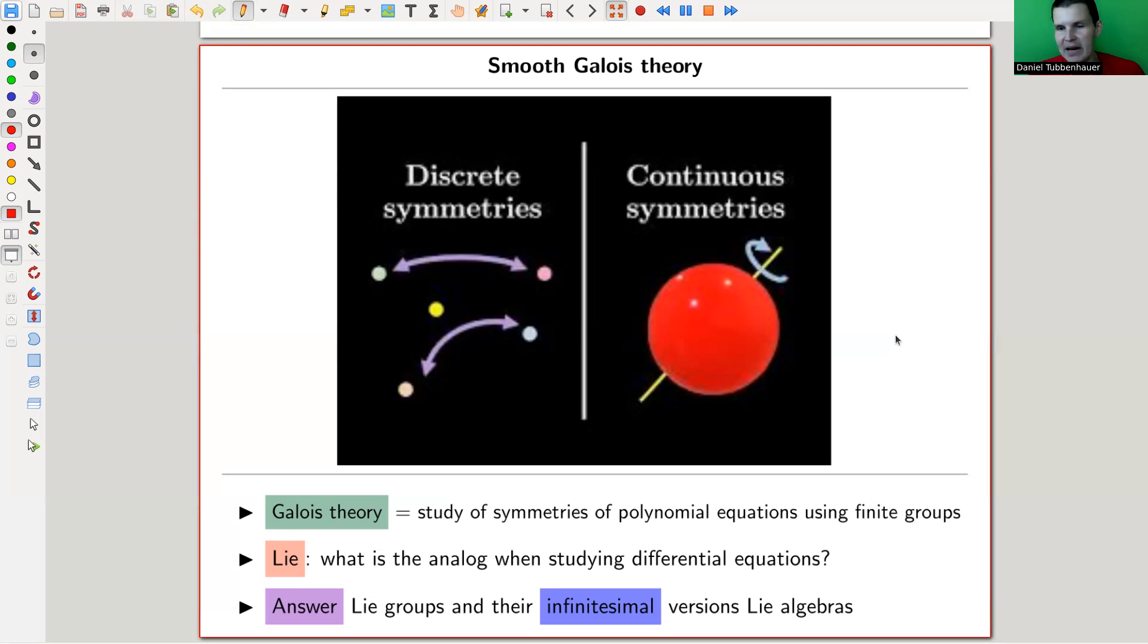Then Lie, a little bit later - Galois around 1820, Lie around 1860 - Lie came up with this idea: maybe we don't want to study polynomial equations. Polynomial equations are fantastic, but maybe we understand them now, and we should rather study differential equations. Nobody has done symmetries of differential equations, and there should be an analog group acting on those symmetries.